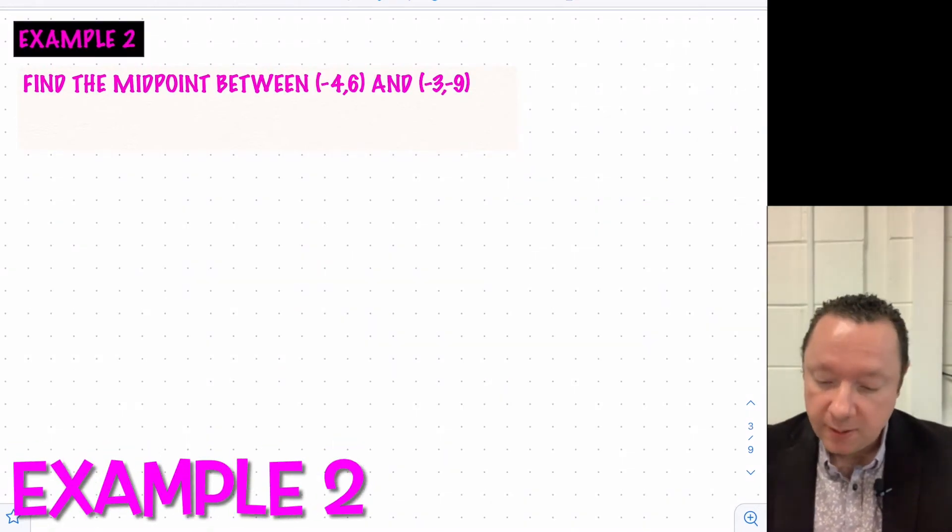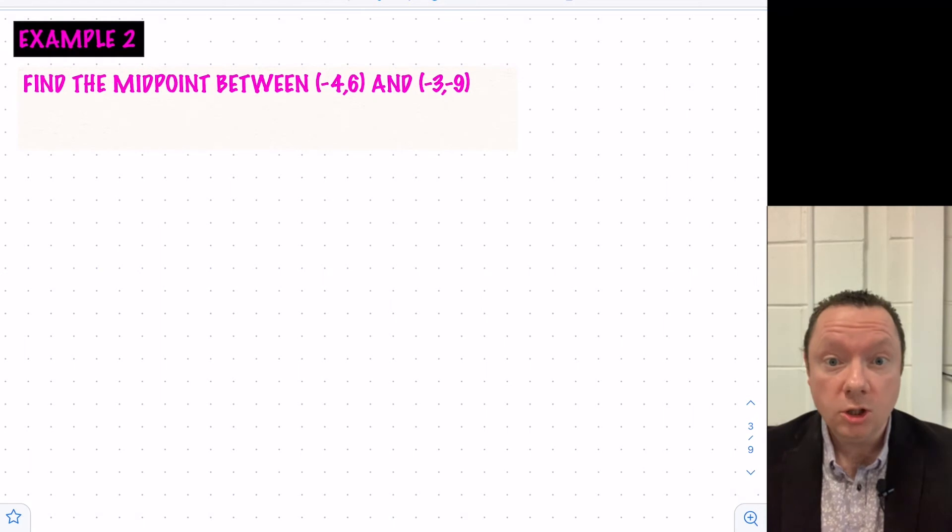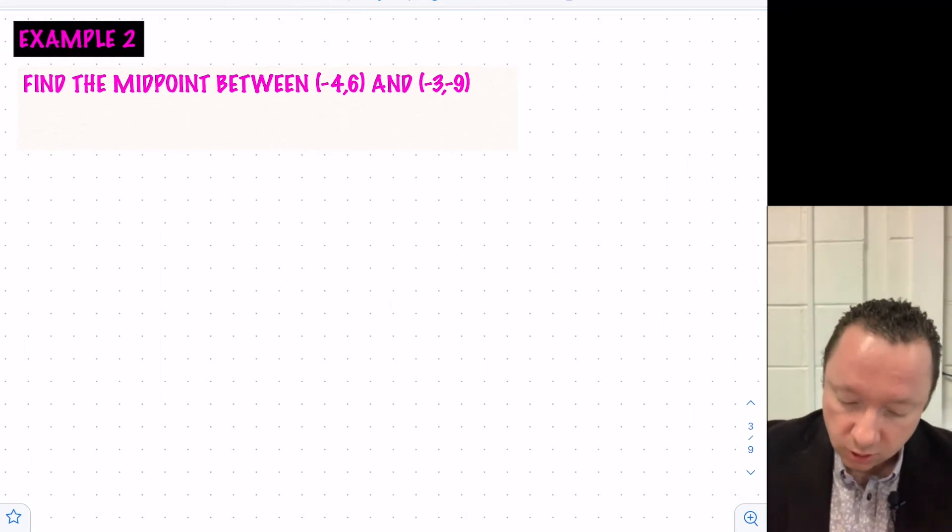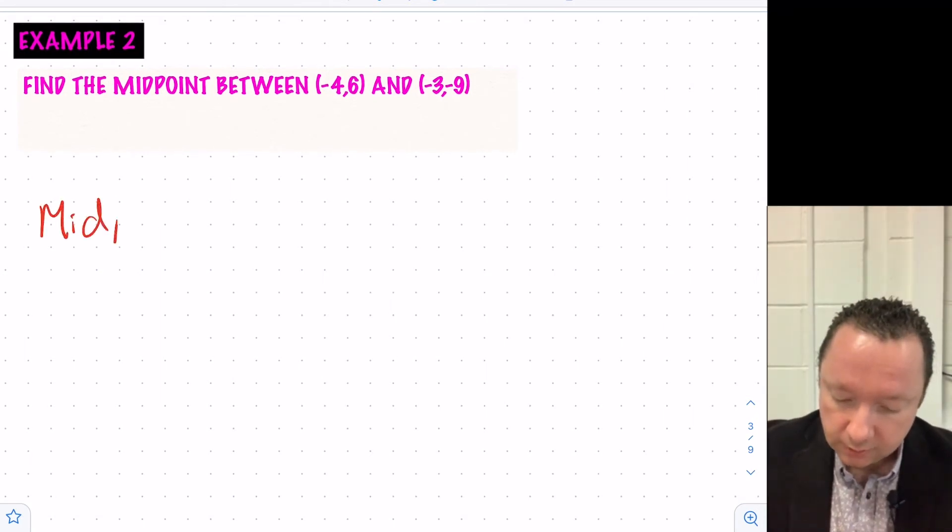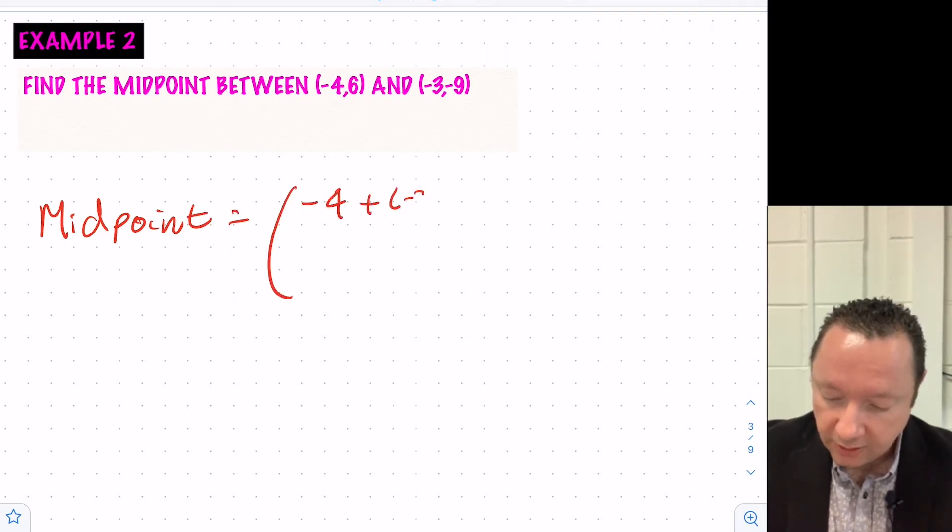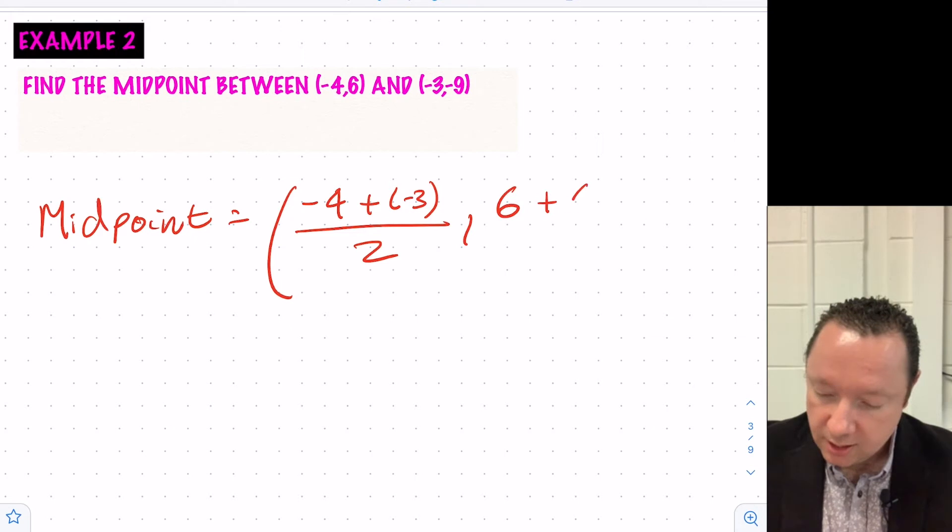Example 2 says, find the midpoint between minus 4 and 6, and minus 3 and minus 9. So you just need to watch your negatives here. So your midpoint is simply just going to be the average of the x's, minus 4 plus minus 3 divided by 2, and the average of our y's, which is 6 plus negative 9 divided by 2. So watch out for these negatives.